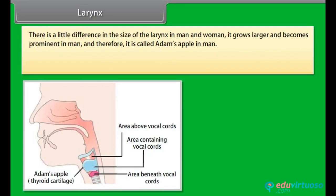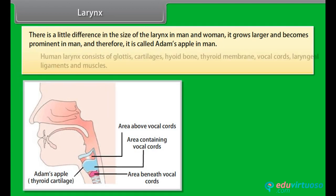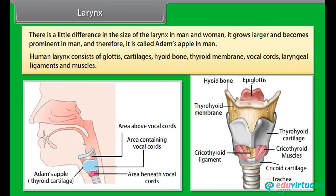There is a slight difference in the size of the larynx in men and women. It grows larger and becomes prominent in men, and is therefore called Adam's apple. The human larynx consists of the glottis, cartilages, hyoid bone, thyroid membrane, vocal cords, and laryngeal ligaments and muscles.